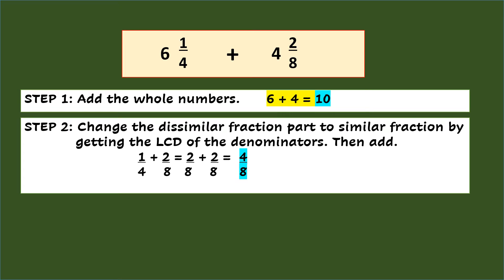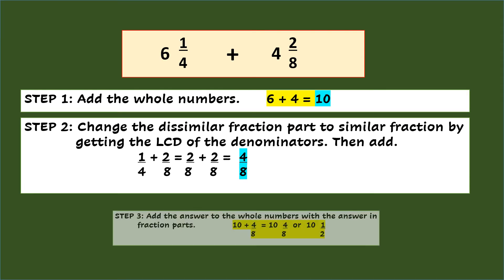Step 2, change the dissimilar fraction part to similar fraction by getting the LCD of the denominators. Then add. So using the LCD 8, 1 fourth plus 2 eighths will be equal to 2 eighths plus 2 eighths. Adding them will give you 4 eighths.